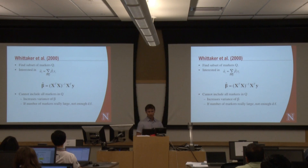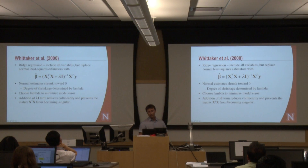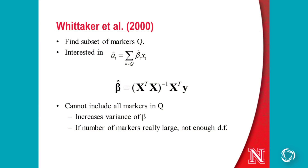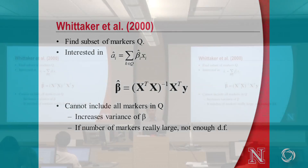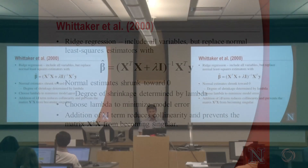So this isn't going to work. The approach called ridge regression adds this lambda-I term to our ordinary least squares estimates. What this essentially does is shrink the marker effects down towards zero, reducing the variance on those marker effect estimates. We want to choose a lambda that minimizes the model error. The addition of lambda to this cross-product matrix reduces the collinearity. If the number of markers exceeds the number of individuals, the X'X matrix is not full rank, so you can't invert it — which is why we need ridge regression.